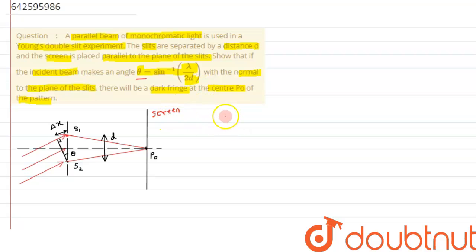Its value has been given as, so we can write theta is given as sine inverse of lambda by 2d. Here small d is the distance between two slits as per the given question, and we are interested to show that the fringe that has been formed at the center at this point P₀ is dark in nature.